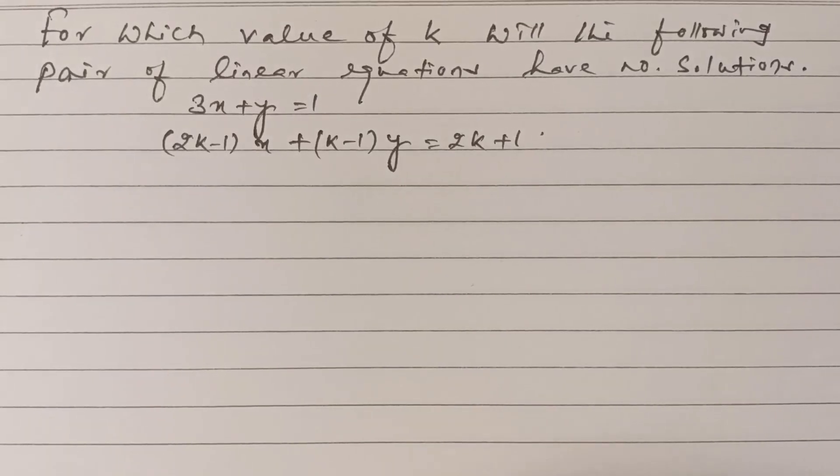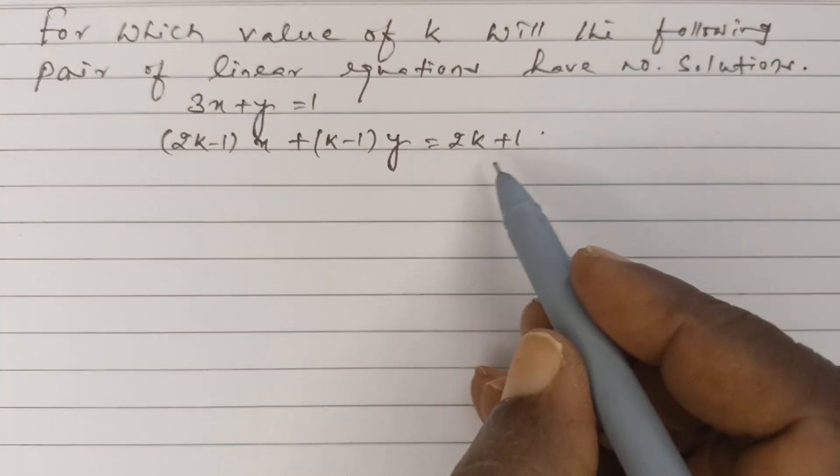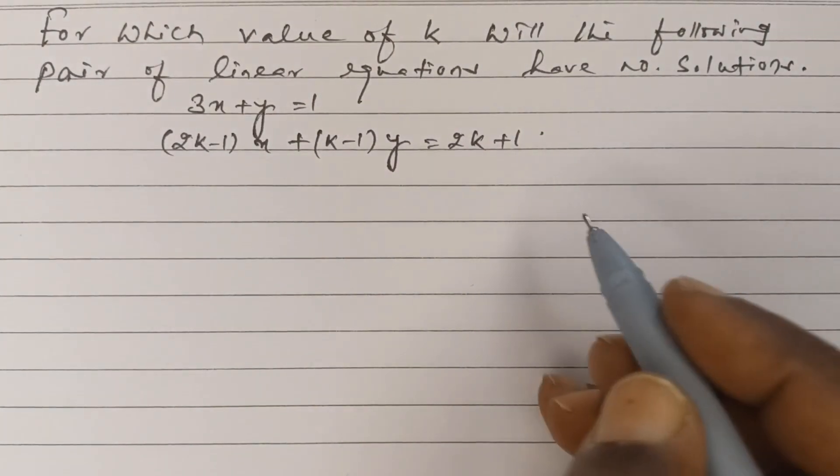For which value of k will the following pair of linear equations have no solutions? That is, 3x plus y is equal to 1, and (2k minus 1)x plus (k minus 1)y is equal to 2k plus 1.